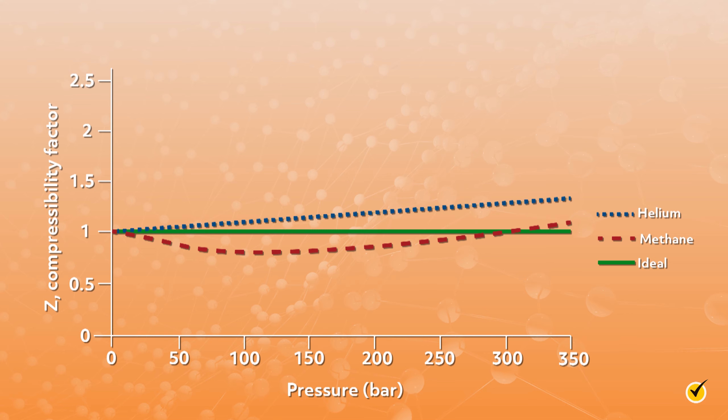Notice that for the ideal gas, the solid line, the value is always one because PV equals NRT by definition. For the two real gases, you can see that both have Z values of about one. They are essentially behaving ideally. And note that when we say low pressures, this includes atmospheric pressure, approximately one bar. So for most real gas problems happening on Earth, we can comfortably approximate behavior with the ideal gas law.